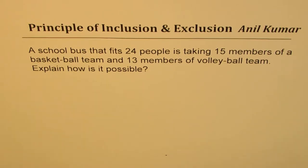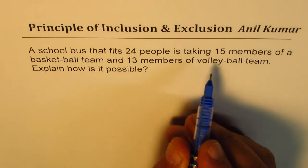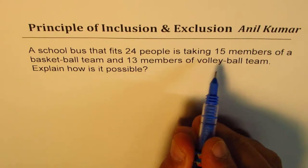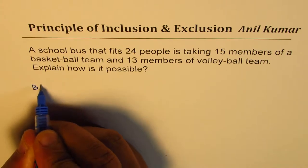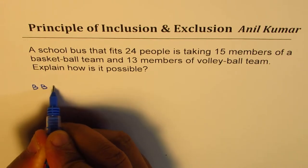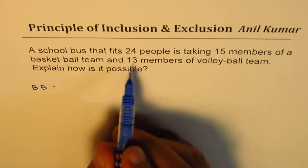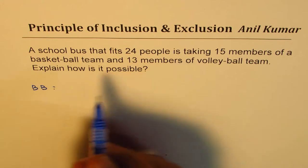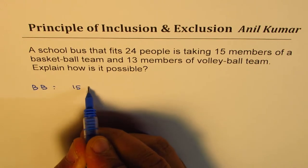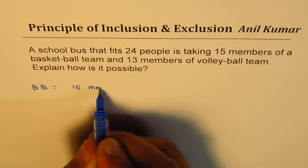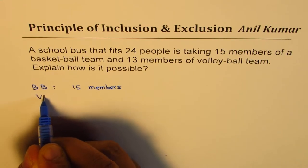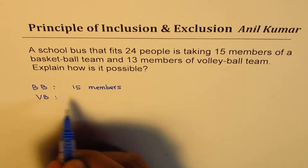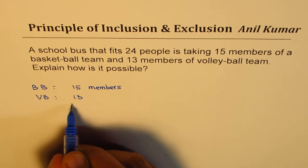Explain how is it possible. So what we have here is two team players. We have the basketball team — let's say BB — and the number of people in the basketball team is 15 members. As far as the volleyball team is concerned, we have 13 members.